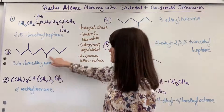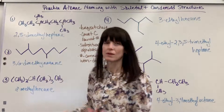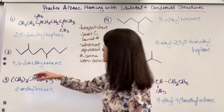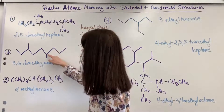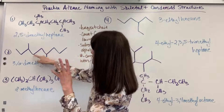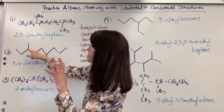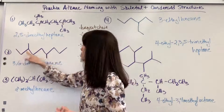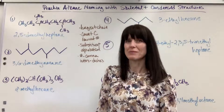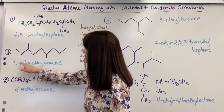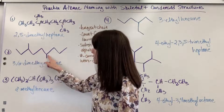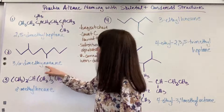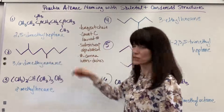I notice we have two substituents — one right here and one here. How can we get the smallest numbers possible? Counting right to left: four and seven. Counting left to right: three and six. Three and six are going to be our smallest numbers.